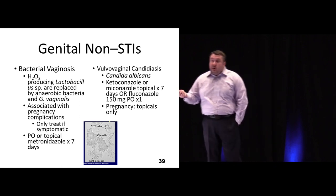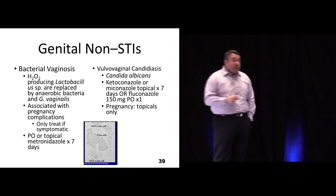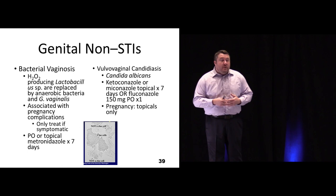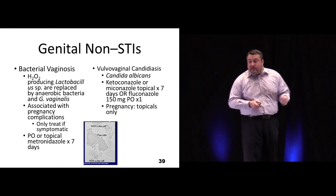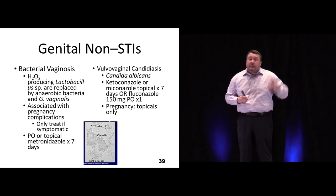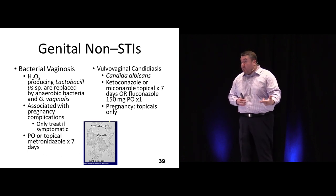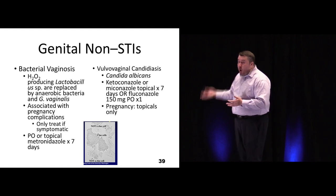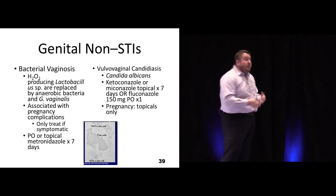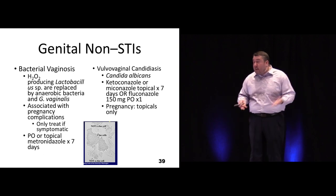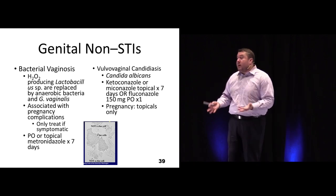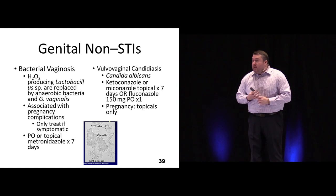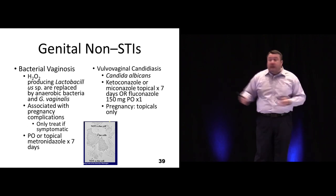Bacterial vaginosis is not an STI but increases STI risk in females — it's an alteration of normal vaginal flora treated with a seven-day course of metronidazole, not the single-dose DOT approach. In pregnancy, BV must be treated as it can cause fetal complications and delivery problems. Vulvovaginal candidiasis is a yeast overgrowth — an over-the-counter topical azole or a single dose of oral fluconazole is usually effective. Probiotics may reduce the risk of candida infection when taking antibiotics.